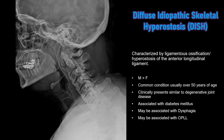On this lateral cervical image you'll see thick flowing hyperostosis within the expected area of the anterior longitudinal ligament, and that's consistent with diffuse idiopathic skeletal hyperostosis (DISH). Posteriorly there's also ossification of the posterior longitudinal ligament, and this can cause neurologic symptoms and canal stenosis.